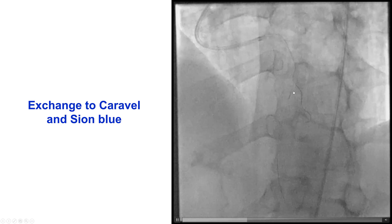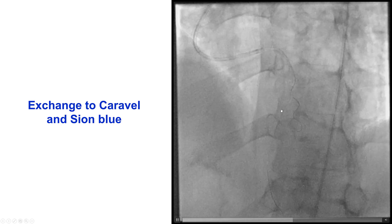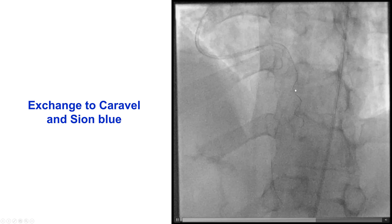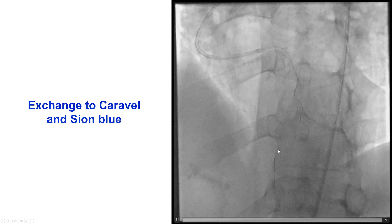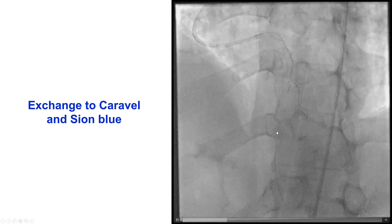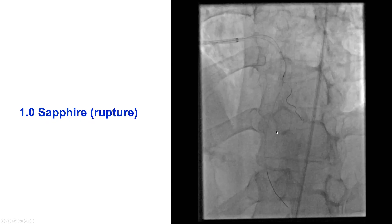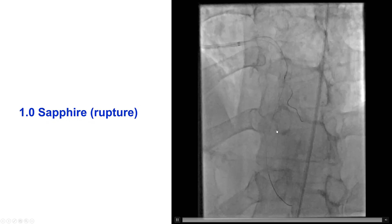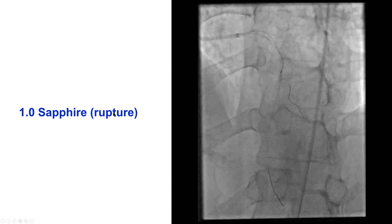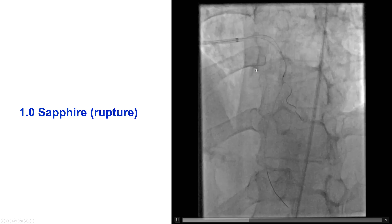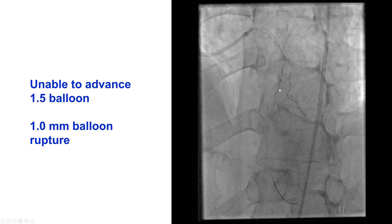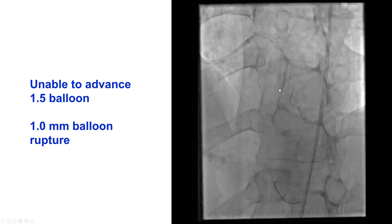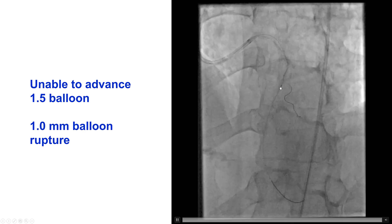We do not want to perform stenting over this guide wire, so the Caravel microcatheter was reinserted and used to exchange the Confianza for the workhorse guide wire. But then we had difficulty crossing with the balloon — we could not cross with a 1.5 mm balloon, and a 1.0 mm Sapphire balloon actually ruptured, so we tried to inflate it at the proximal cap.